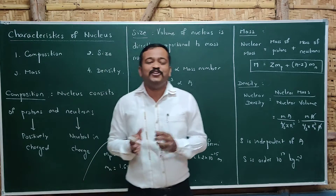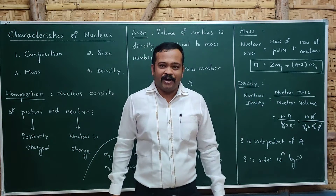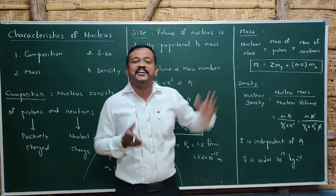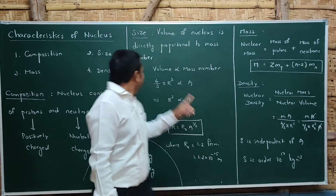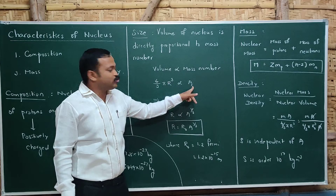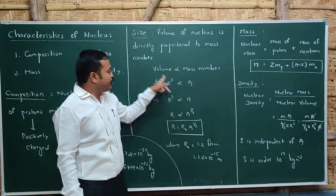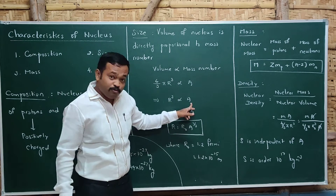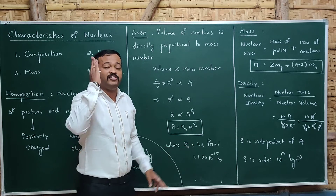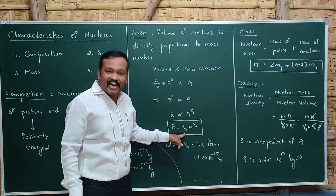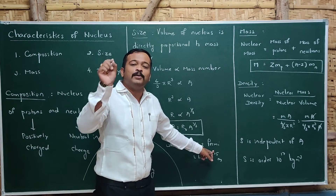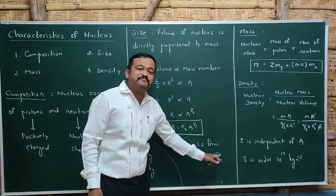The second characteristic is size. The size is expressed in terms of volume. The volume of the nucleus is directly proportional to the mass number A. Since the nucleus is considered spherical, volume = (4/3)πr³ ∝ A, which gives r³ ∝ A, and therefore r ∝ A^(1/3). Removing the proportionality gives a constant r₀, so the formula for nuclear radius is: r = r₀ × A^(1/3). The value of r₀ is 1.2 Fermi, where 1 Fermi = 10⁻¹⁵ meters. So r₀ = 1.2 × 10⁻¹⁵ m. As mass number increases, the size of the nucleus increases.